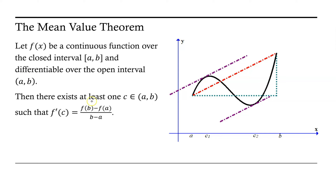Then there exists at least one c in that interval from a to b, not including a and not including b, such that f prime of c is equal to the quantity f of b minus f of a over the quantity b minus a.